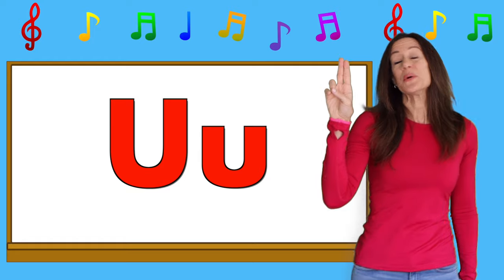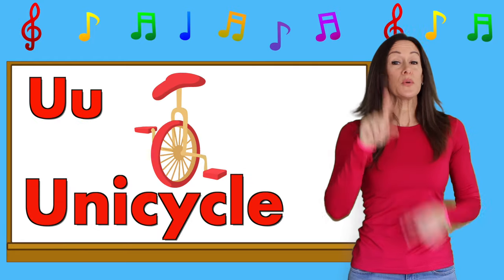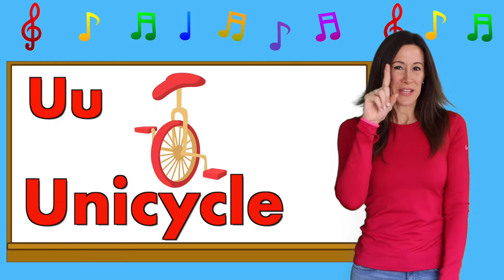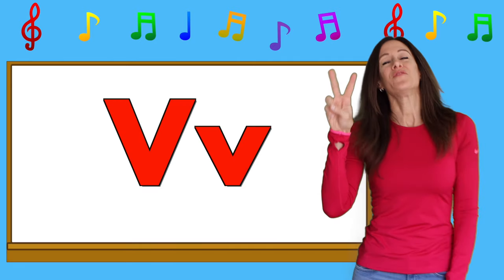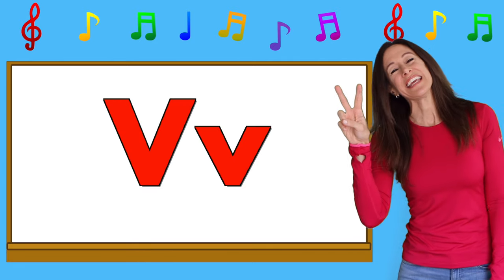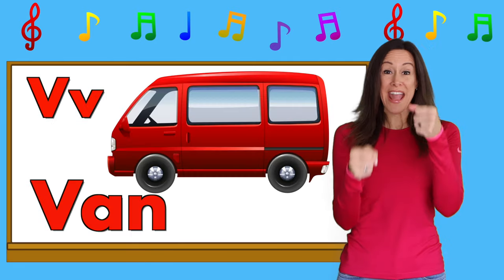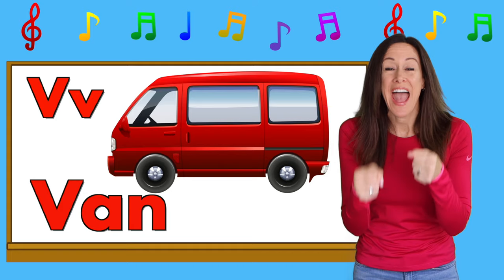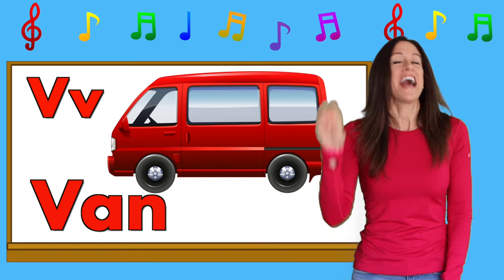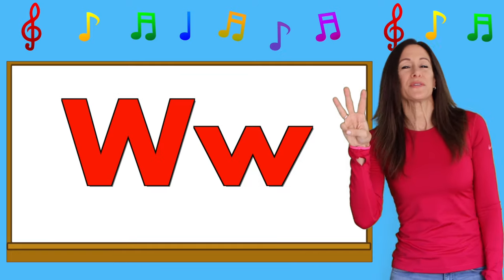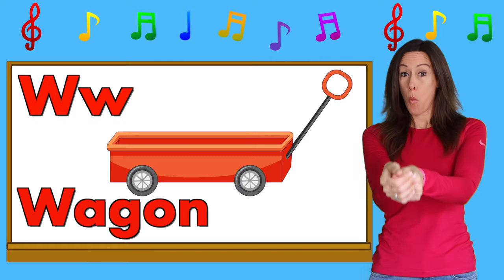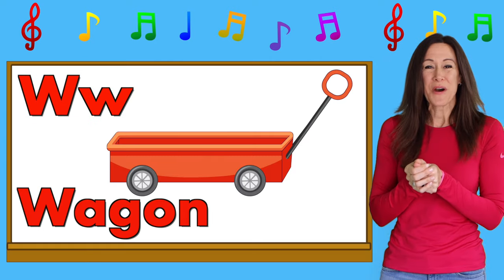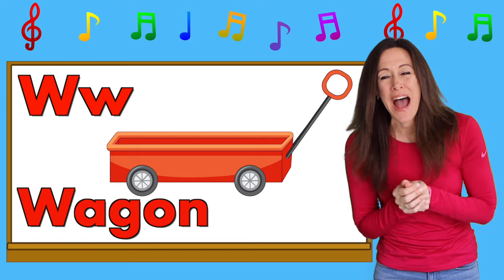U is for u-unicycle, u-unicycle. V is for v-v-van, v-v-van. W is for w-w-wagon, w-w-wagon.